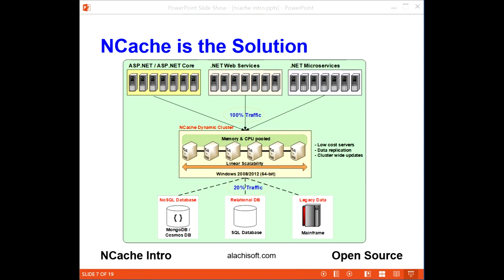NCache then lets you add more servers to this caching tier as your transaction load grows. As a result, NCache can scale linearly and never becomes a performance bottleneck. On top of this, since NCache is totally in-memory, it is super fast.